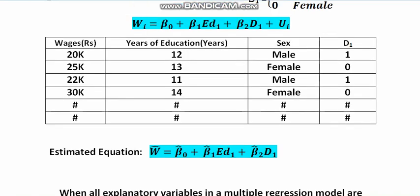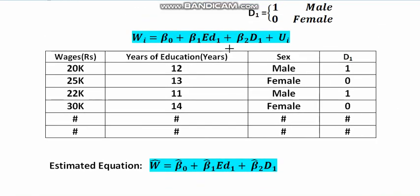If you go back to D₁, male indicates 1 when it is male, so you should be very careful when you put the value of the dummy variable. For example, the second sample is 25,000 and years of education is 13 years. If it is female, accordingly you will put the value of D₁ as 0, since we identified female with 0.